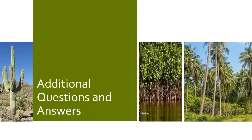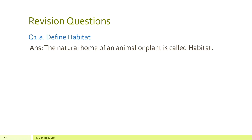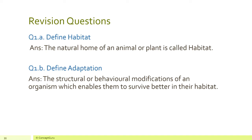Now let's look at some additional questions and answers. Define habitat: the natural home of an animal or plant is called its habitat. Define adaptation: the structural or behavioral modifications of an organism which enable it to survive better in its habitat is called adaptation.